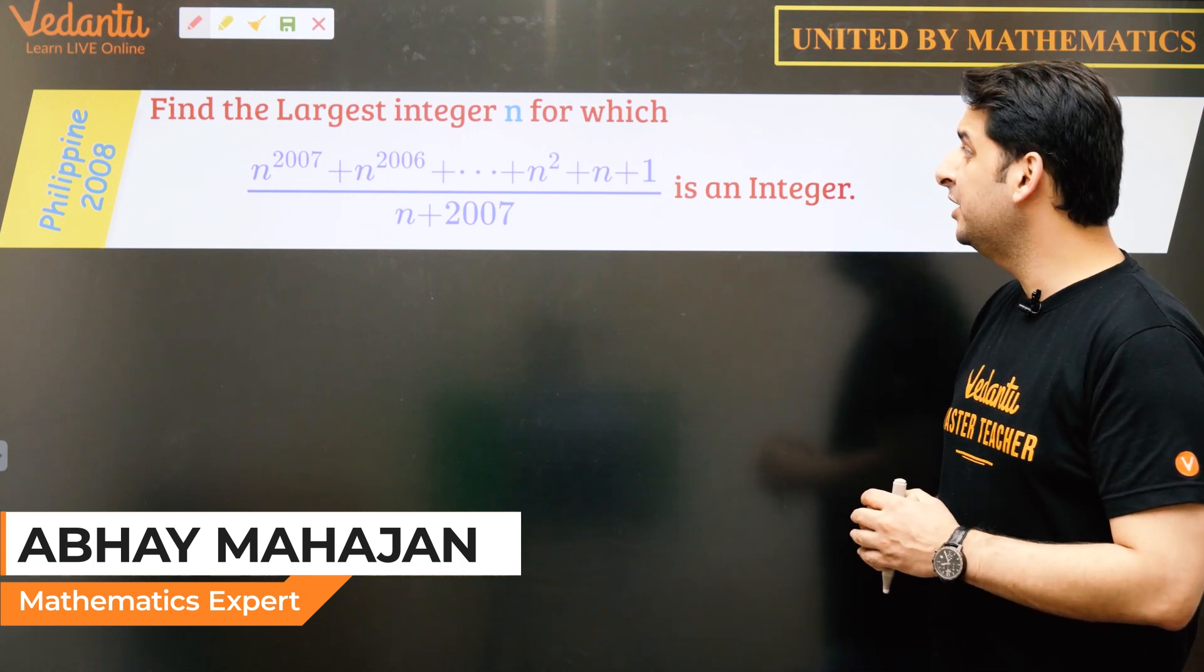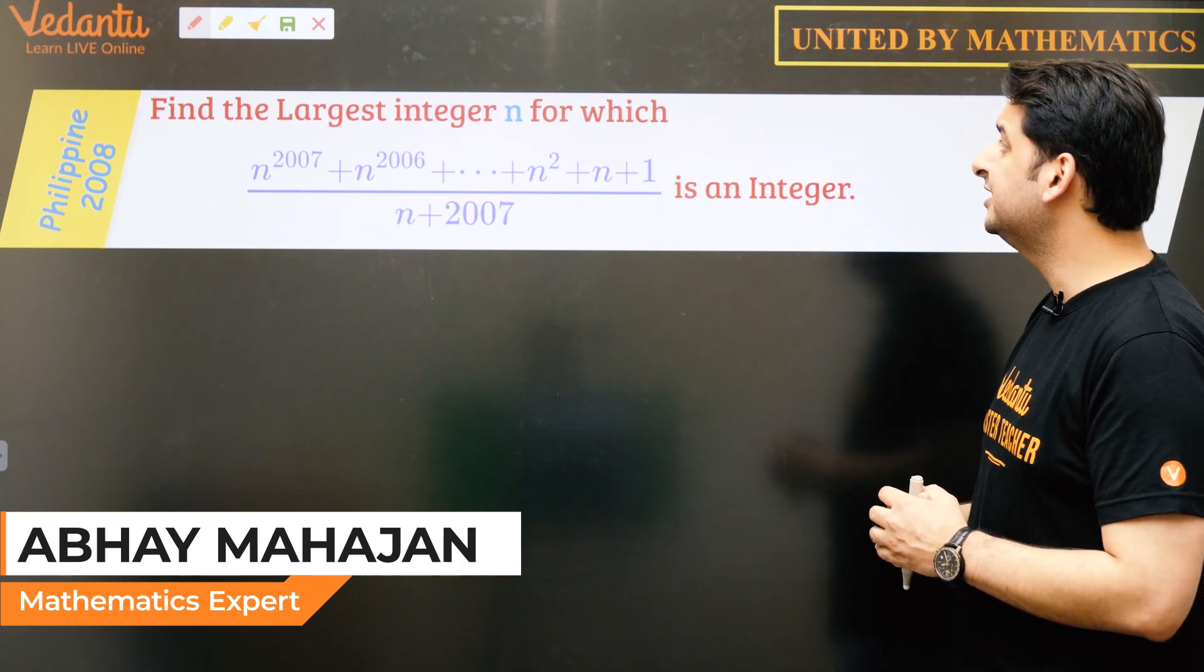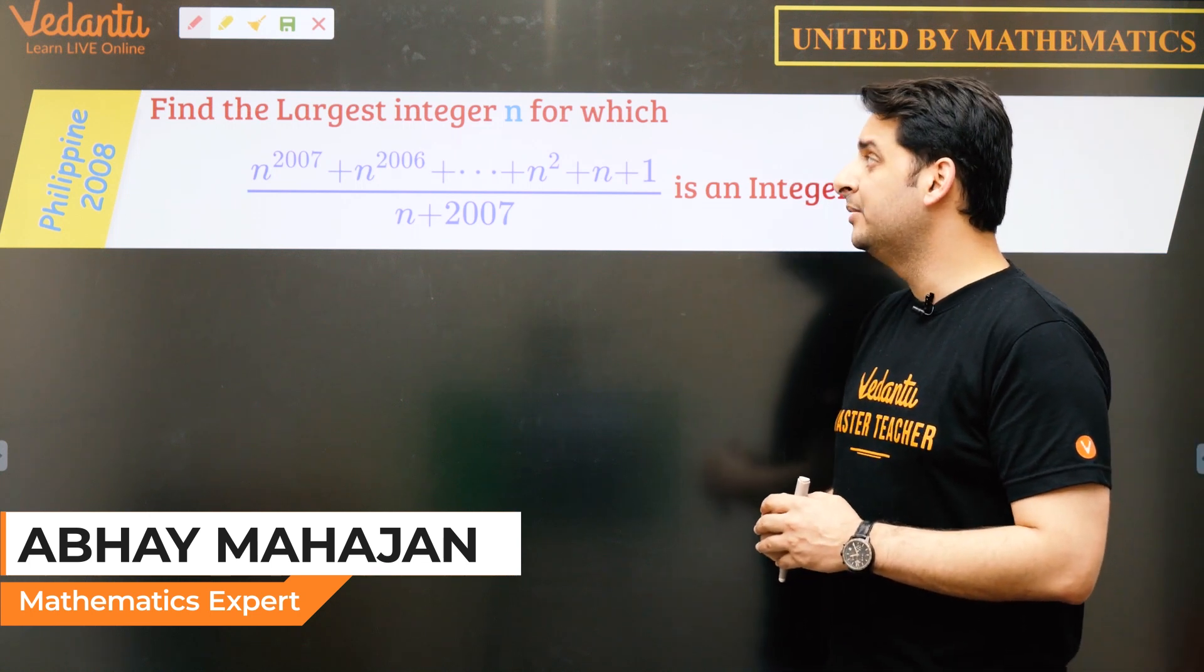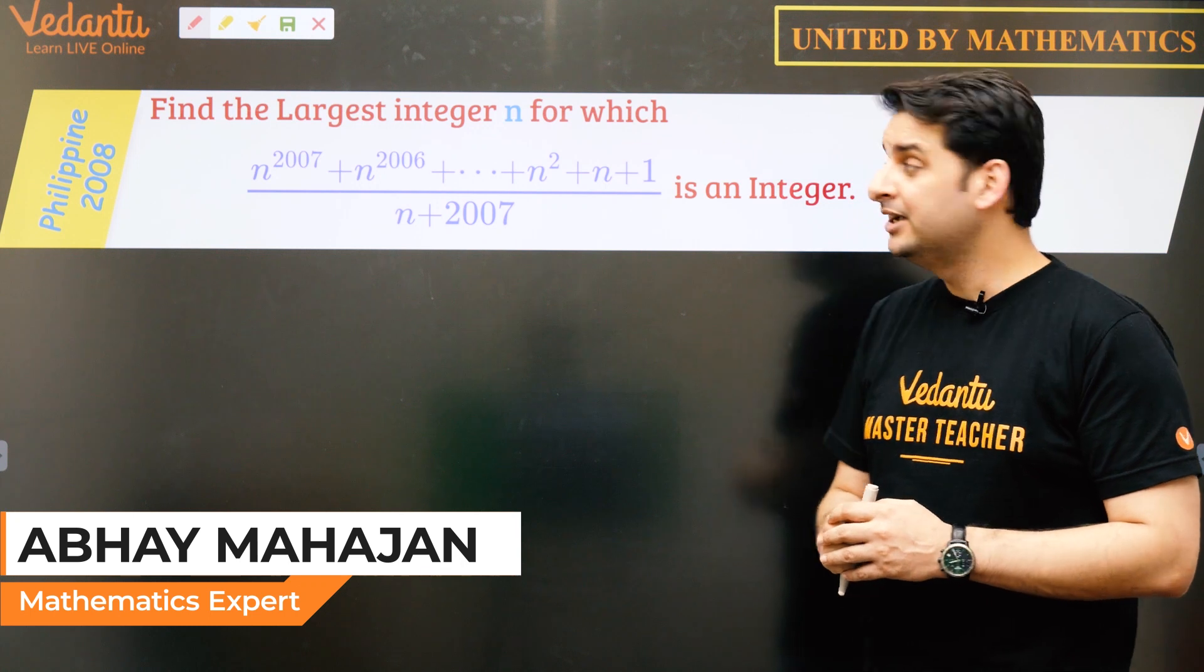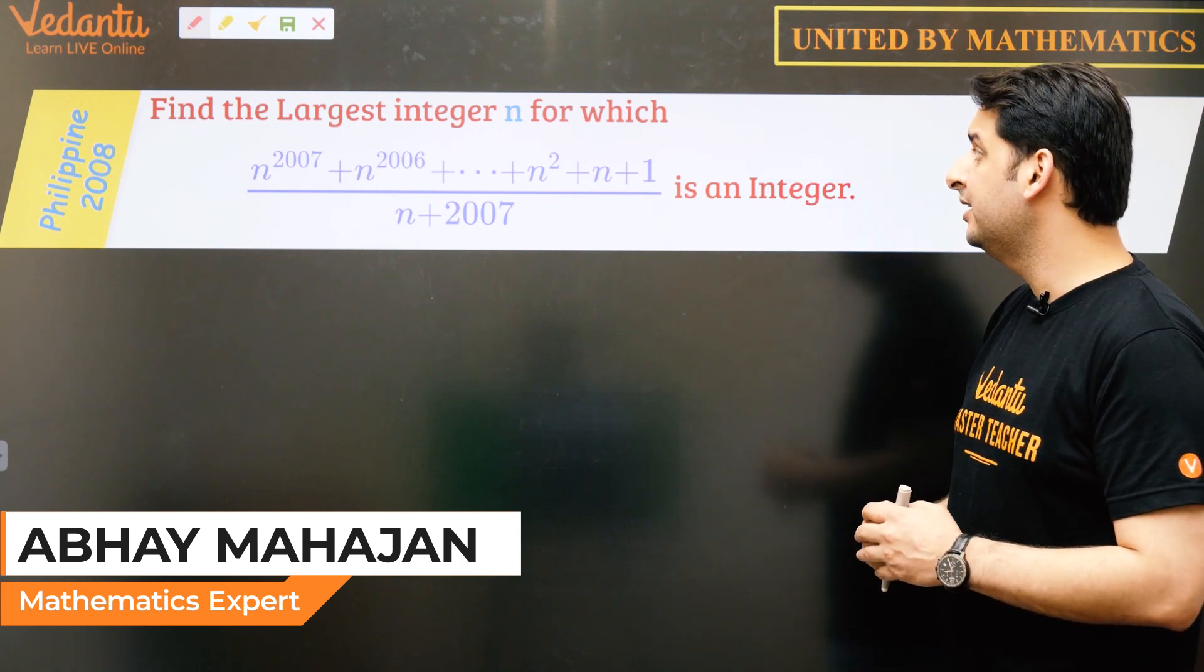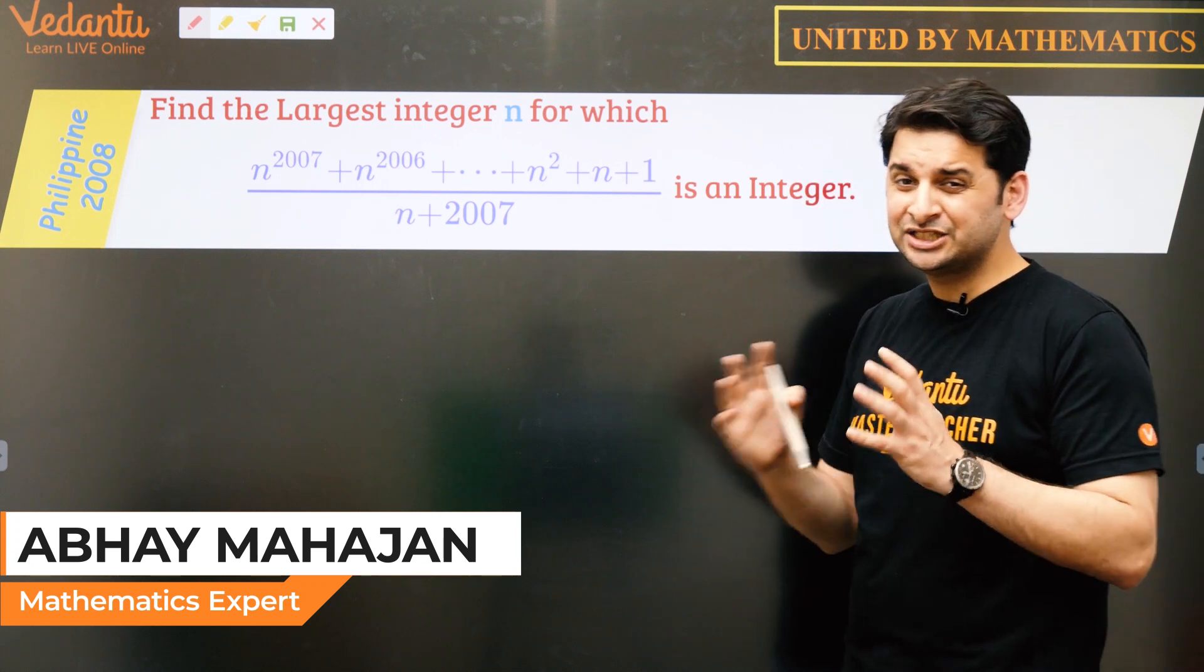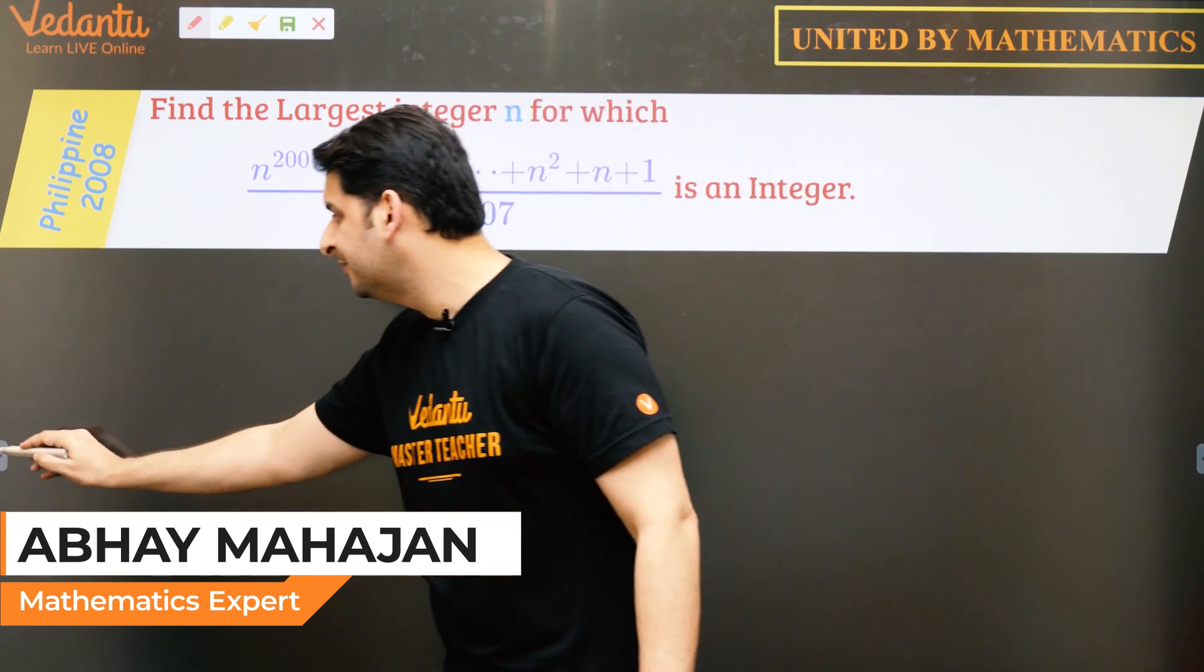So this one is from Philippine 2008. The question says, find the largest integer n for which n to the power 2007 plus n to the power 2006 and it goes till n plus 1 upon n plus 2007 is an integer. So this question looks a bit difficult because of the larger powers involved but it actually involves some basic division algorithm.